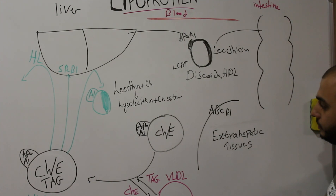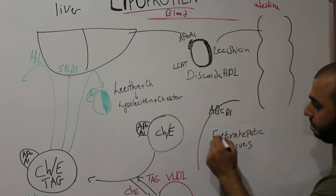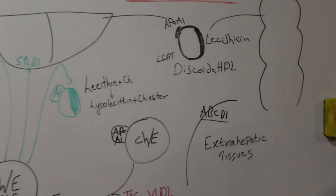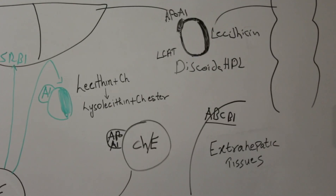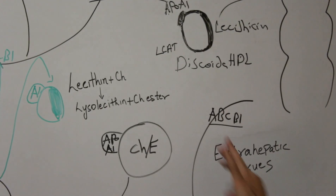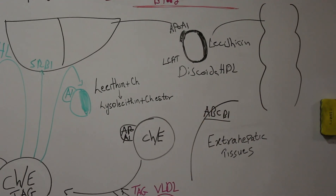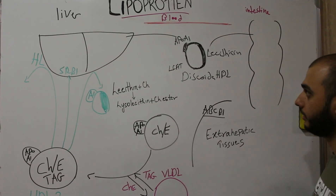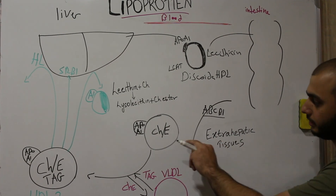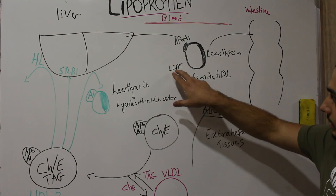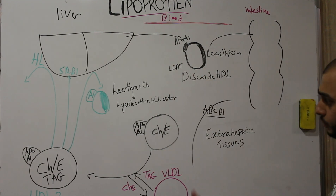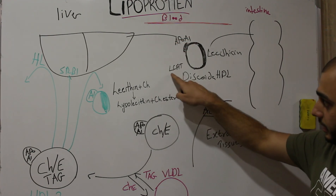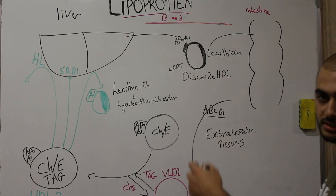As discoidal HDL moves through the blood and reaches the capillary beds of extra-hepatic tissues, there is an ABCB1 receptor — the ATP-binding cassette B1 receptor — which keeps throwing off cholesterol molecules toward HDL. Whenever HDL takes up a cholesterol molecule, this reaction is done by the LCAT enzyme, which is promoted by apoprotein A1.